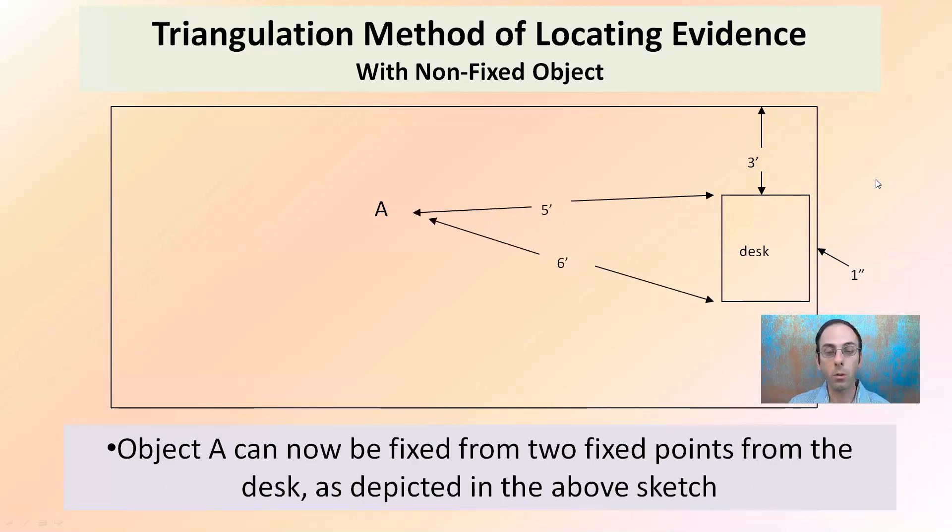So object A can now be fixed from the two fixed points from the desk as depicted in the above sketch. Five feet from here and six feet from here. Now we've established where that desk is located.